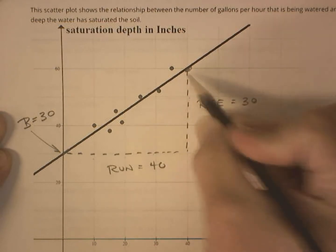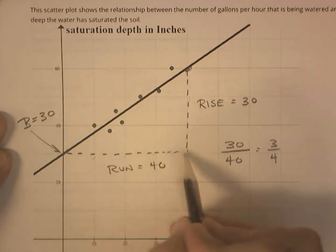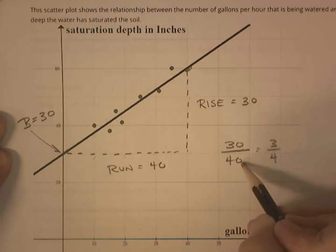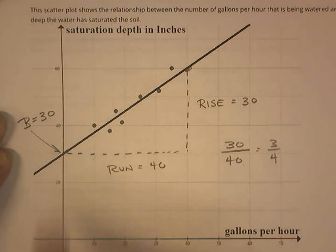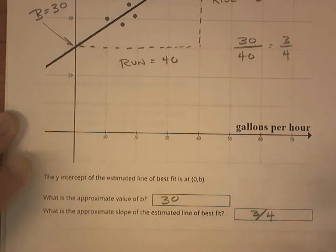It's got a rise of 10, 20, 30, and a run of 10, 20, 30, 40. So it's 30 over 40, which is 3 fourths. So the y-intercept's at 30, and the slope is 3 fourths.